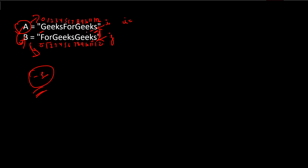We compare characters at i and j. If they are equal, we decrement both i and j. We continue: 's' and 's' equal, 'e' and 'e' equal, 'g' and 'g' equal — decrement both pointers each time. When the characters at i and j are not equal, we need to move that character to the front, so we increment the count and decrement only i.